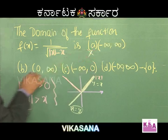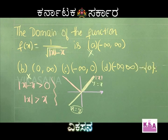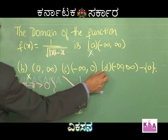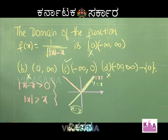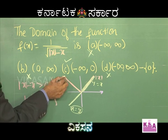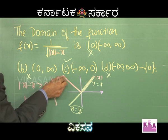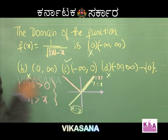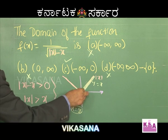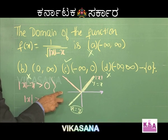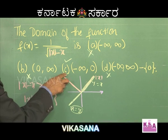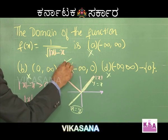Looking at the graph, y = |x| lies above y = x only when x is negative. When x is negative, |x| > x, so |x| - x > 0 and the function is defined. Therefore the domain is x ∈ (-∞, 0), and option c is correct.